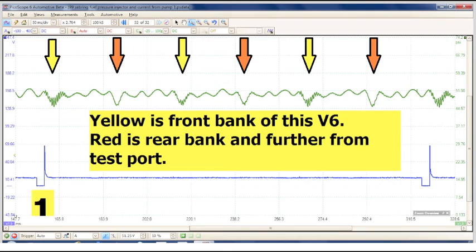Again, these patterns are going to vary from engine to engine based on design. In the case of the squiggly little lines that you see on this pattern, they tend to correspond with the front bank of this V6 engine. That's also the point that's closest to the test port. The ones further away, and thus having their signals dampened by the fuel rail, show a lot smoother pattern.